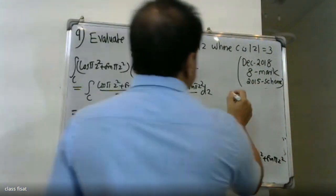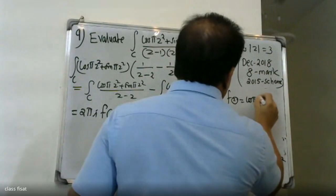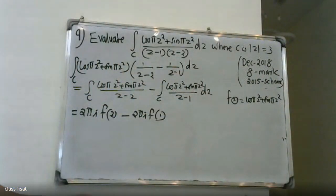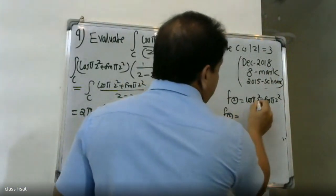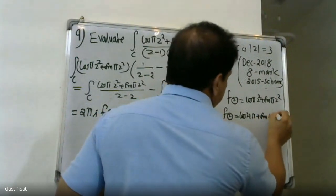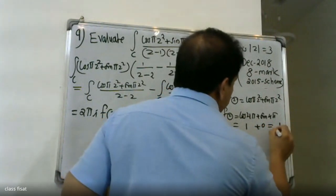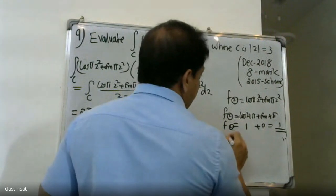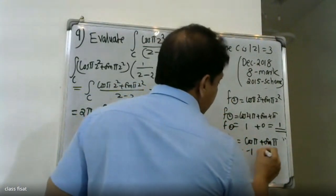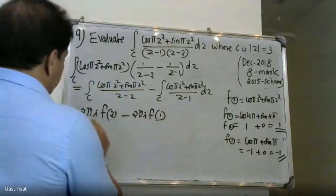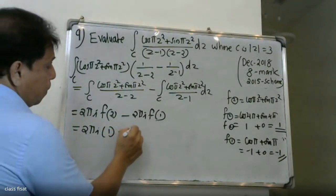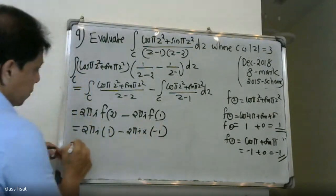Now f(z) = cos πz² + sin πz². We evaluate: f(2) = cos 4π + i sin 4π. Since cos 4π = 1 and sin 4π = 0, f(2) = 1. For f(1) = cos π + sin π; cos π = -1 and sin π = 0, so f(1) = -1.